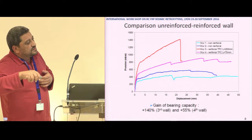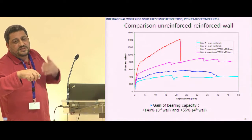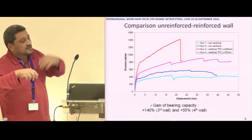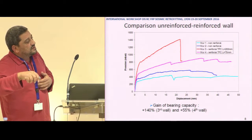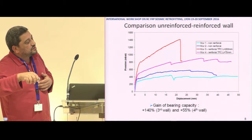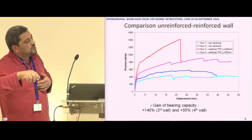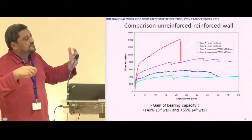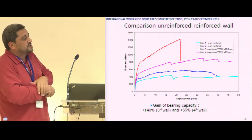In the case of the concrete slab, the initial crack appearance is delayed and the capacity of the wall is higher than in the beam case. The collapse for the slab configuration occurs later, giving more ductility due to the stiffer boundary conditions.